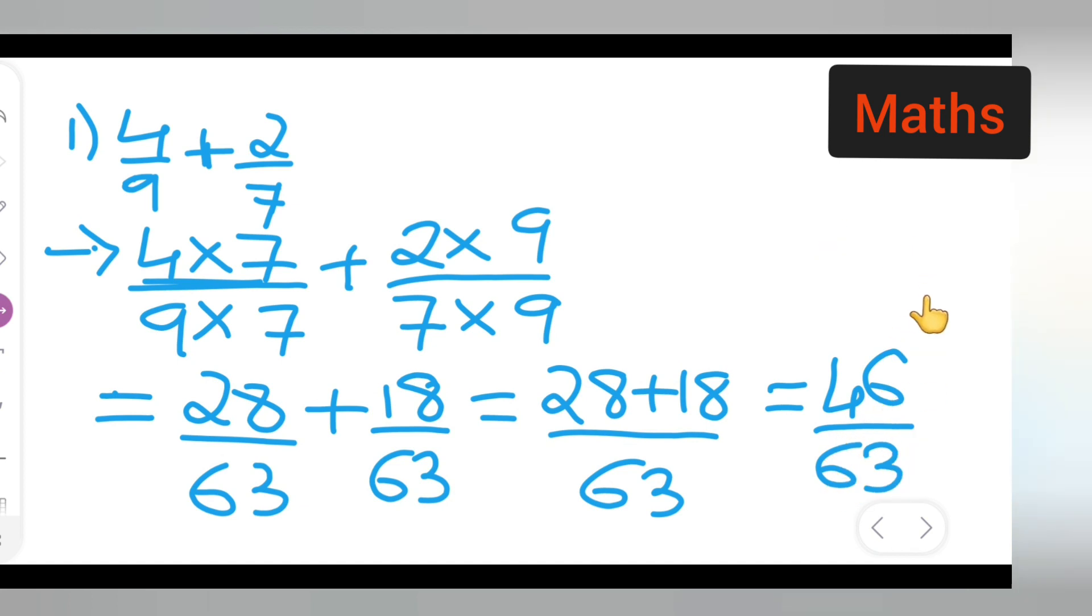This is the way how y'all have to add when you have two different denominators. When the denominators are not same, what we do is we make the denominators same by cross multiplying. I hope y'all have understood how to add.